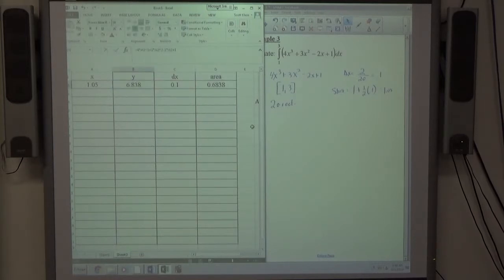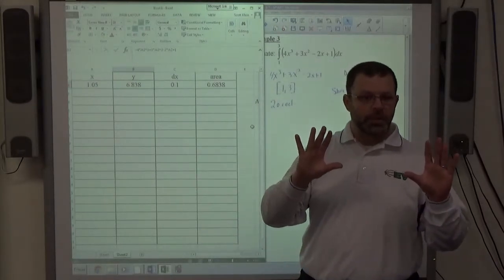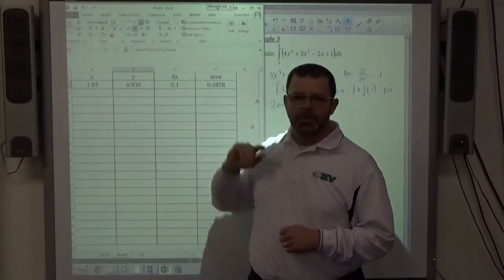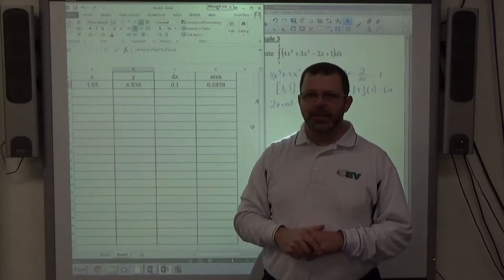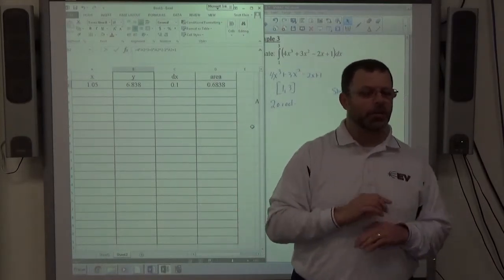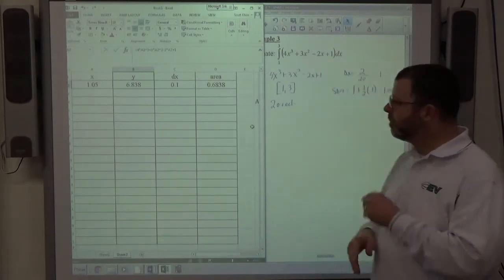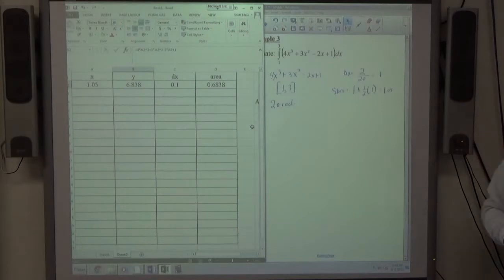And just to highlight something I said, I was stressing it very much because it's very important: you have to hit the times key. If you put 4A2, the computer can get a little touchy about stuff like that. So 4 times A2, make sure you hit a multiplication key. So that's everything for the first row.